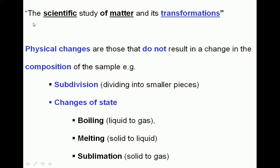We had previously defined chemistry as being the scientific study of matter and its transformations — the changes that matter undergoes. One type of change that matter can undergo is a physical change. These are changes that do not result in a change in the composition of the sample; that is, a new substance is not produced when a physical change occurs.